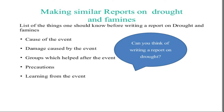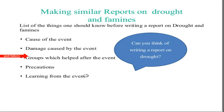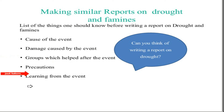When making a report on drought and famine, here is a list of things one should know: the cause of the event, damage caused by the event, groups which helped after the event, precautions, and lessons learned from the event. This is how we write a report on drought, famine, or any natural disaster.